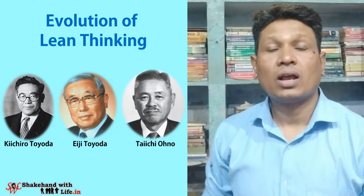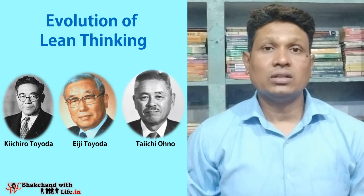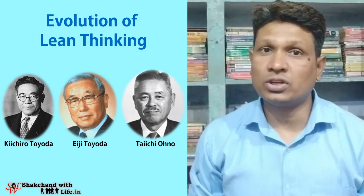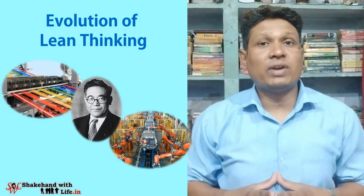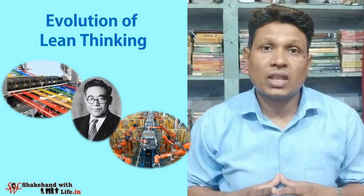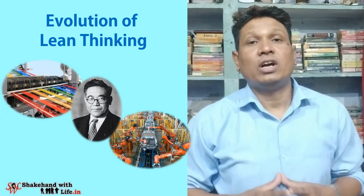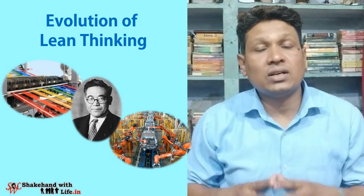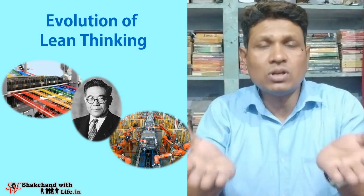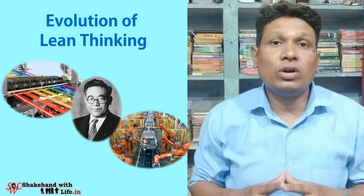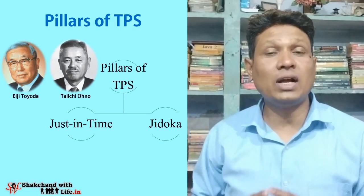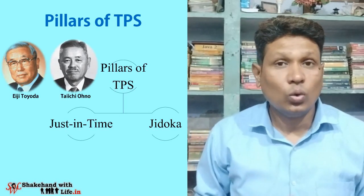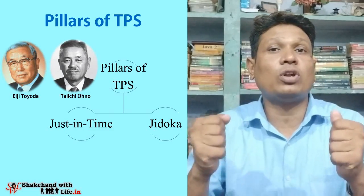The role of three people — Kichiro Toyota, Eiji Toyota, and Taiichi Ohno — cannot be denied in the evolution of lean. Kichiro Toyota had previous factory experience in the textile industry; he increased the efficiency of different processes in textile mills through conveyors and other automated systems, then introduced the same concepts into Toyota's manufacturing process.